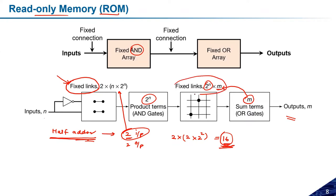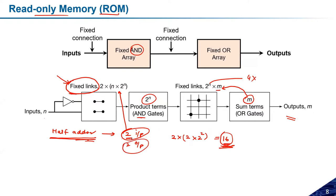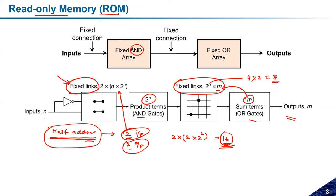Similarly, for the fixed links on the OR structure: 2^n × m, where n = 2 gives 2^2 = 4, and for the half adder the number of outputs m = 2, so 4 × 2 = 8. Therefore eight fixed links will be in the OR structure for a half adder based on read-only memory.